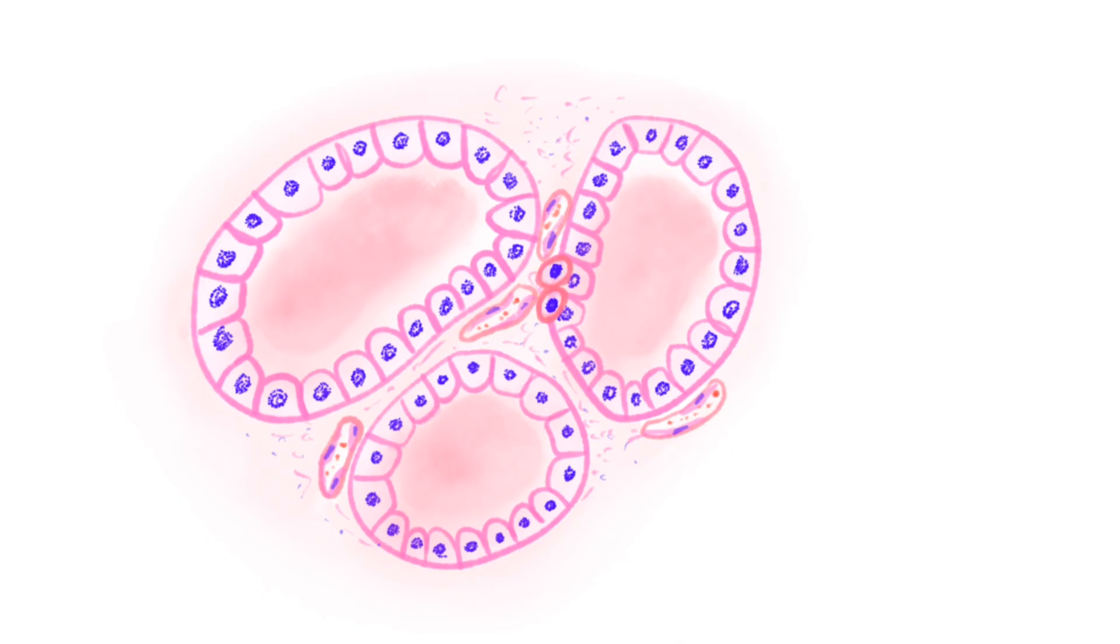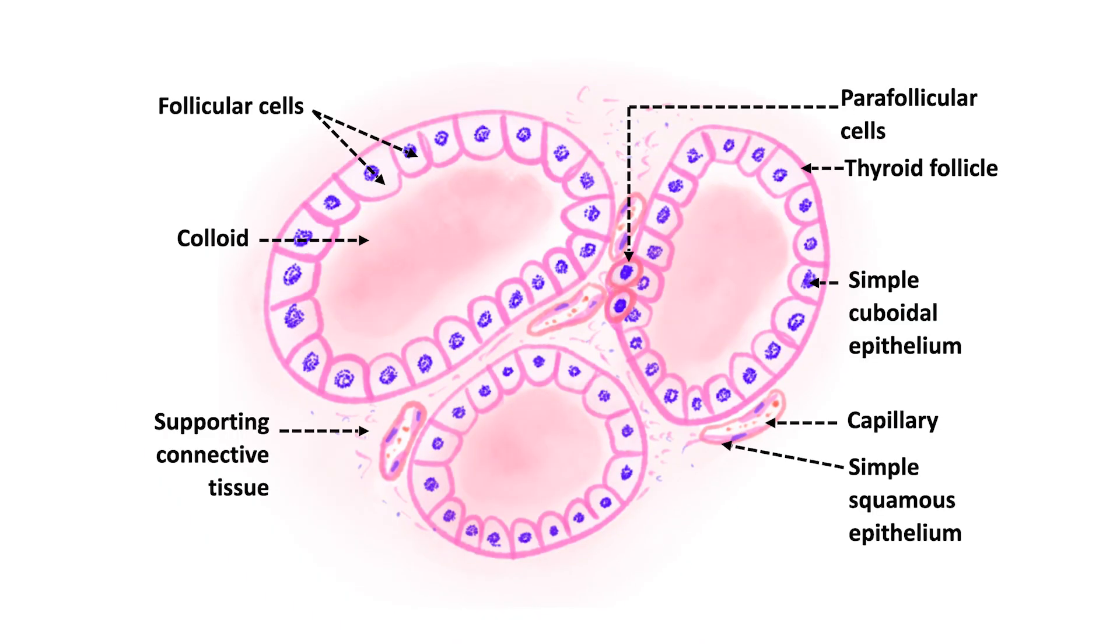And that completes the diagram of thyroid gland. Now, you have to label it. Remember to label it neat and tidy with every label lying outside the field of your diagram.